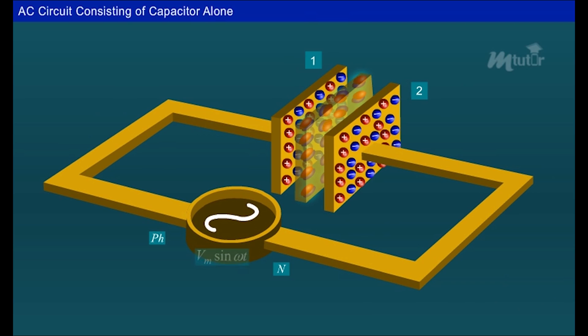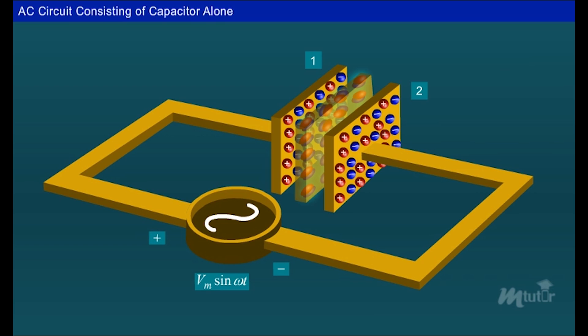The instantaneous input voltage can be expressed as Vm sin ωt. In order to understand the charge flow in the circuit, let us assume a plus sign for the phase and a minus sign for the neutral terminals of the AC supply.